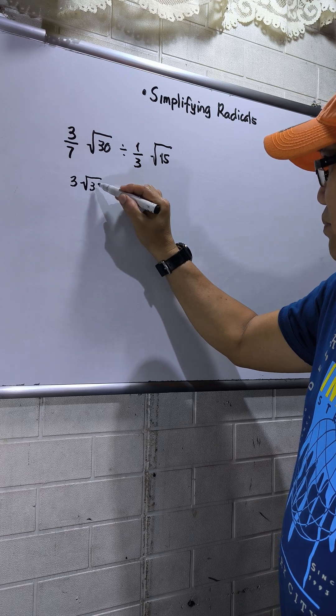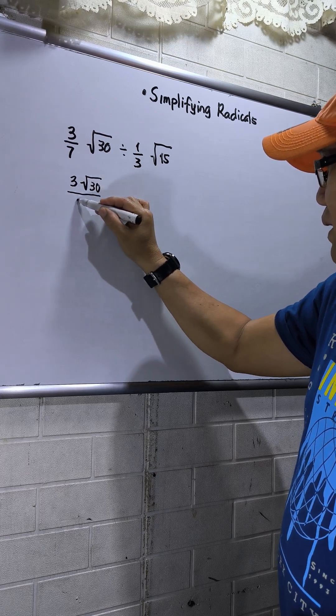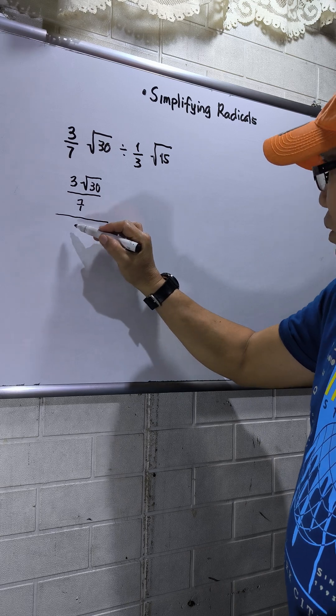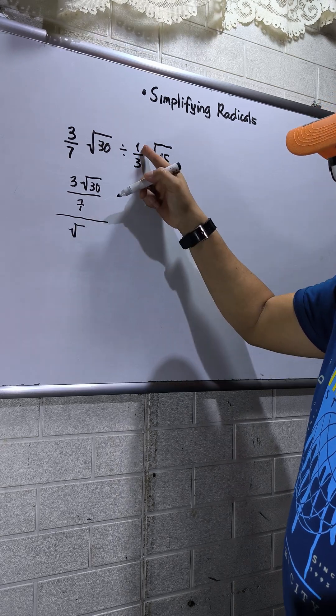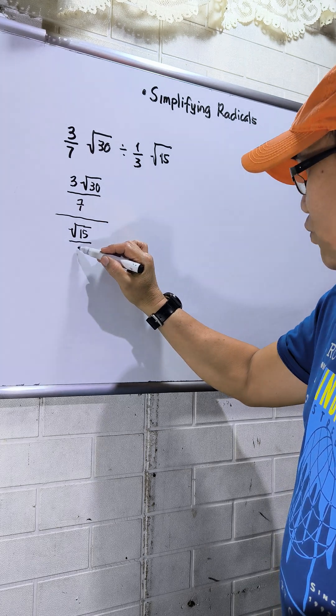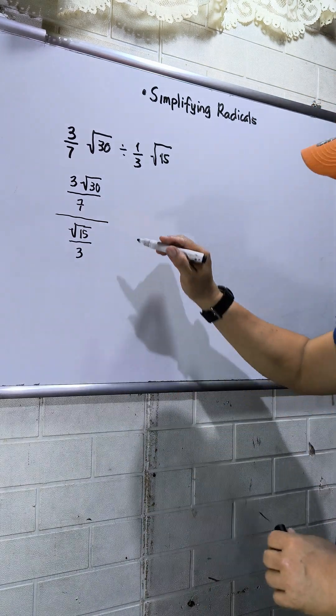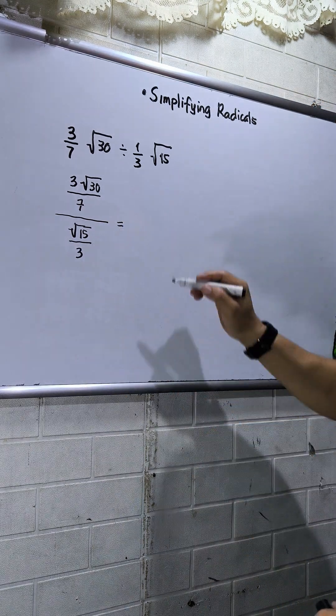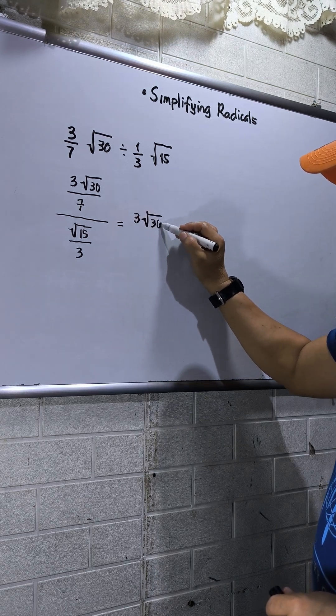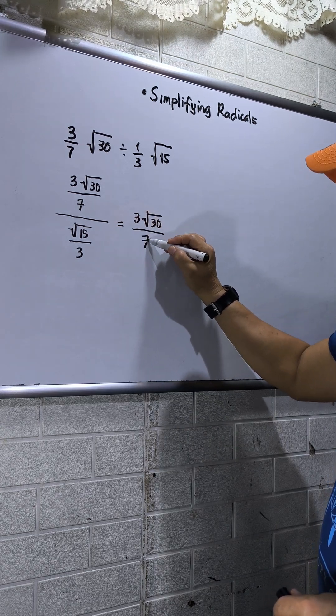Then over 7 divided by square root of 15, because 1 times square root of 15 will be square root of 15 over 3. To simplify this will be 3 square root of 30 over 7.